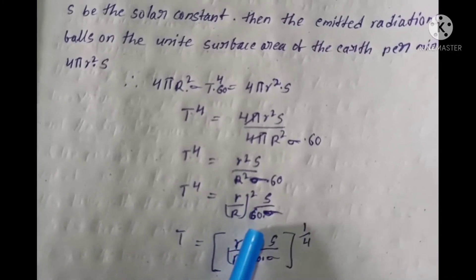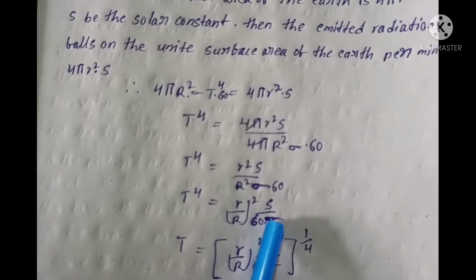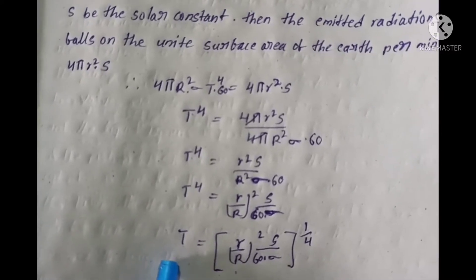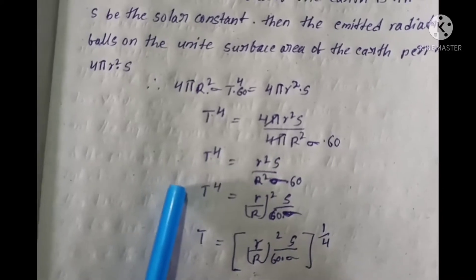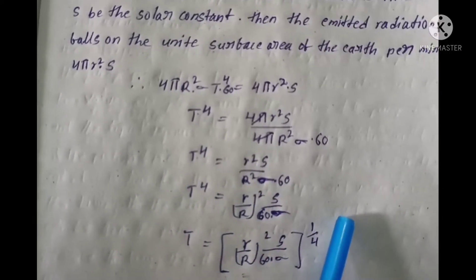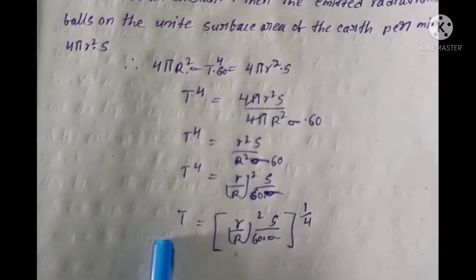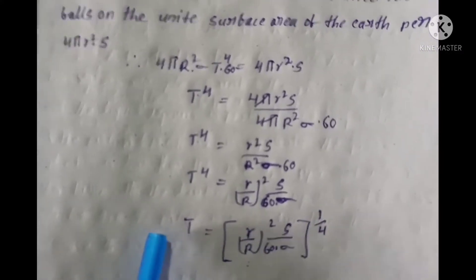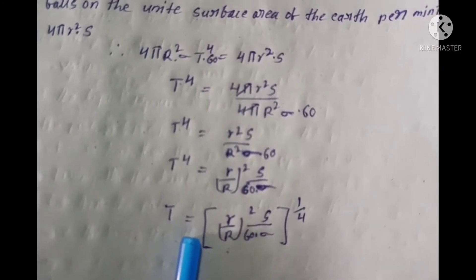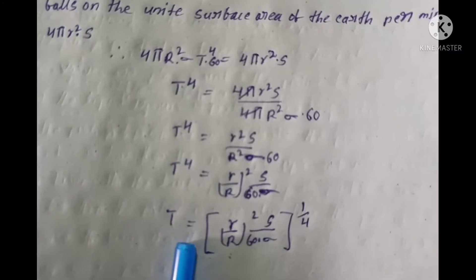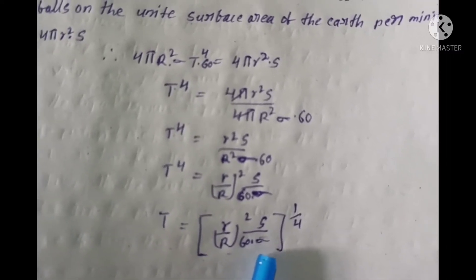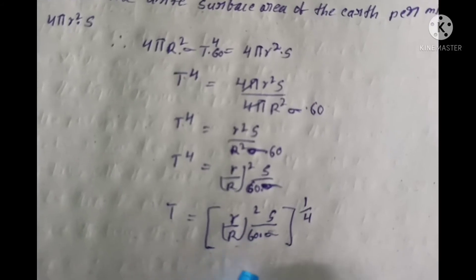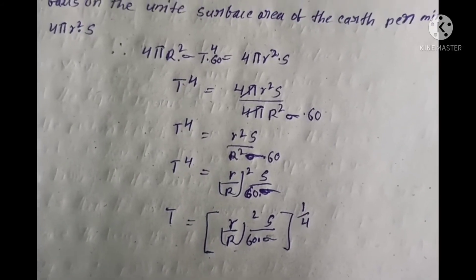Solving for T: T⁴ = (r/R)² × S / (60 × σ), therefore T = [(r/R)² × S / (60 × σ)]^(1/4). This formula is used to calculate the temperature of the sun.